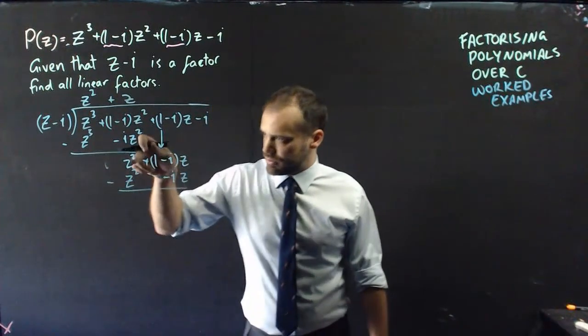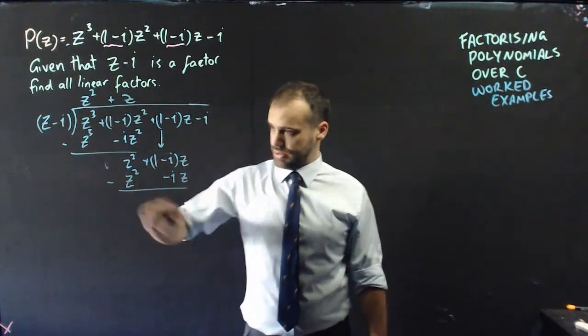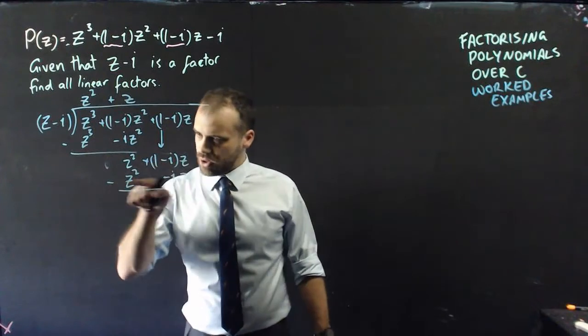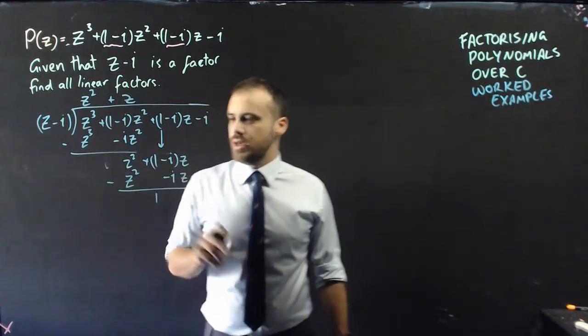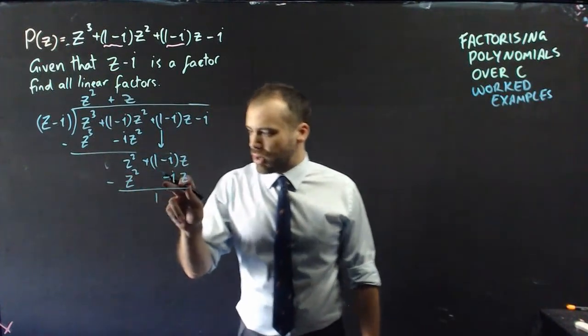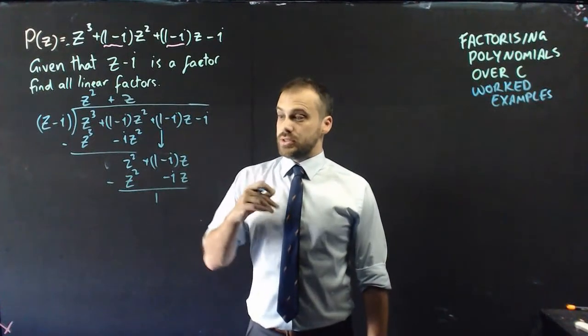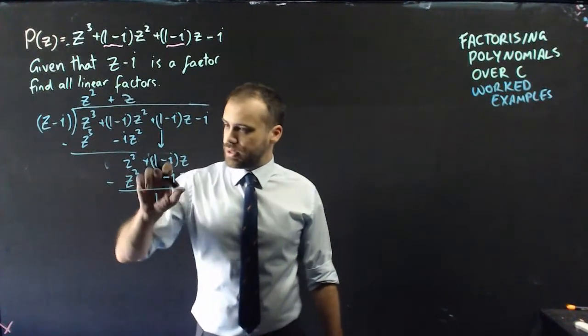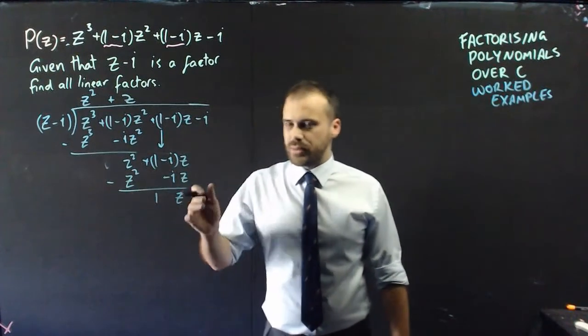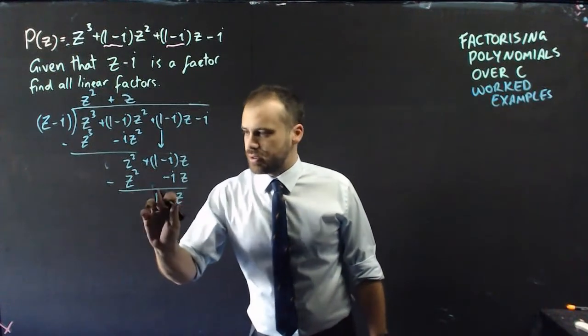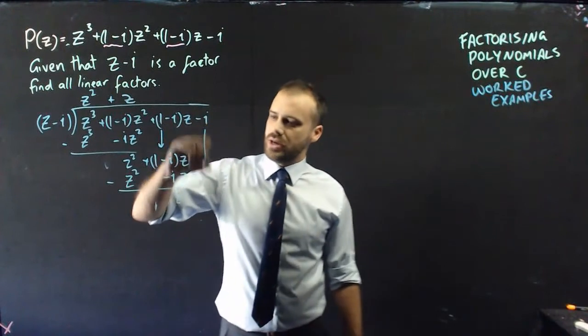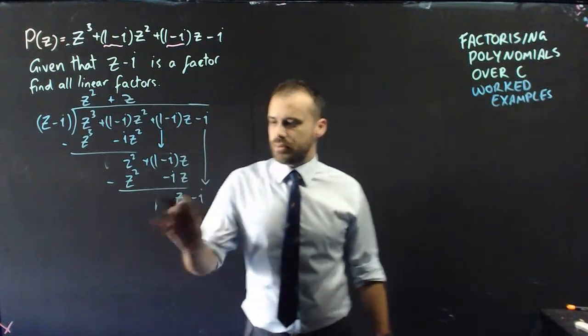z squared divided by z is z, z times z is z squared, and z times negative i is negative i z. This feels like deja vu. z squared minus z squared is 0. 1 minus 0 is 1, and negative i minus minus i is 0i. So, what I'm left with is 1 lot of z, and that 1 becomes pretty meaningless. It's 1 times z. Don't need it. We have our z here. We bring this one down, and we get z minus i.